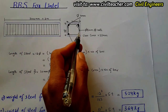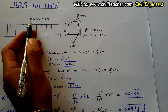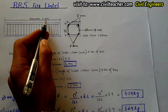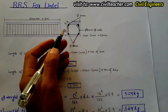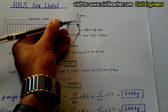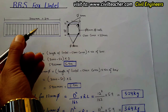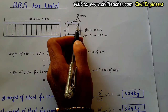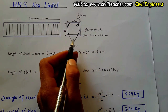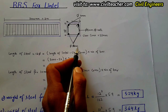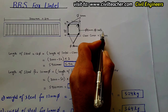This is the longitudinal section of the beam and this is the cross section of the beam. The length of the beam we decide here is 3000 mm, which is equal to 3 meters. The cross section width and depth are both 200 mm. We use two kinds of diameter for the steel in this lintel beam: 10 mm for the top bars and 12 mm for the bottom bars.